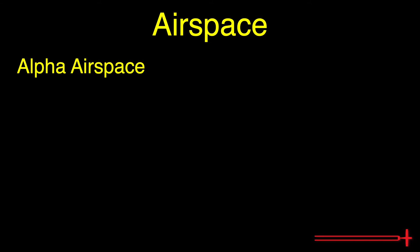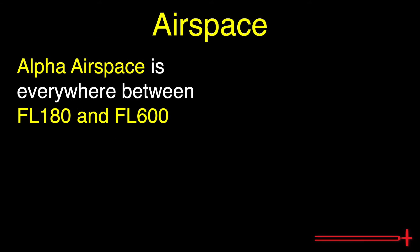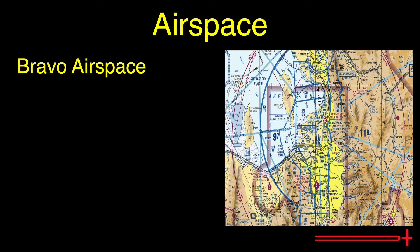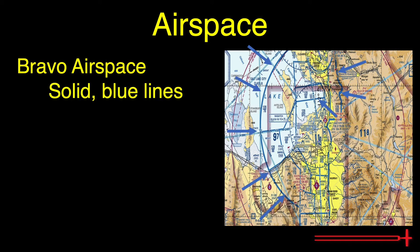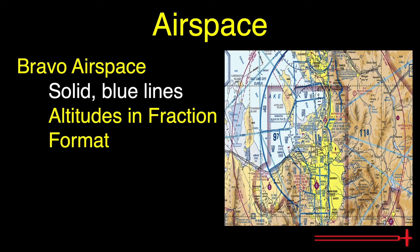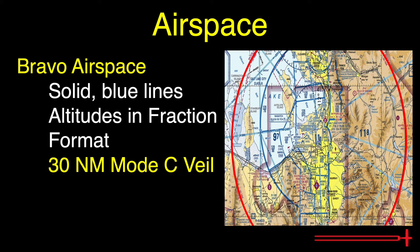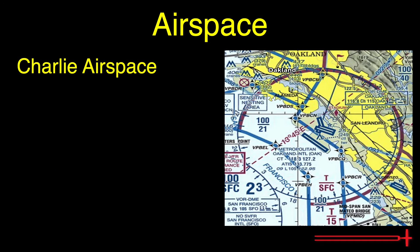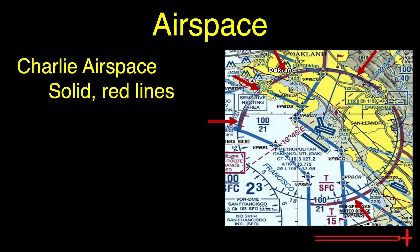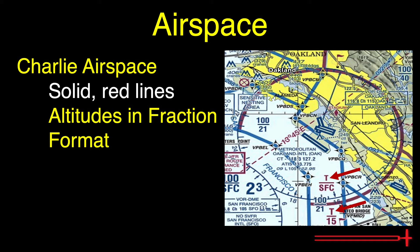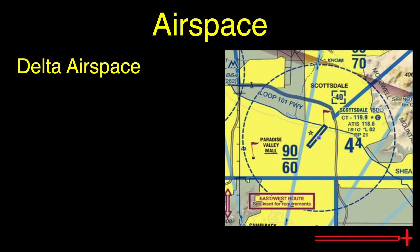Alpha airspace is not depicted on sectional charts but lies everywhere from flight level 180 to flight level 600. Bravo is depicted by solid blue lines, with the upper and lower limits of each shelf in hundreds of feet shown in fraction format in small pink boxes. The Bravo airport is surrounded by a 30 nautical mile radius Mode C veil depicted by a solid red line. Charlie airspace is depicted similarly to Bravo but with red lines instead of blue, with altitude still in fraction format. If a T is involved, that means the airspace extends upward until reaching the Bravo airspace above it.